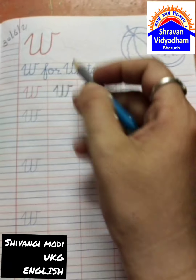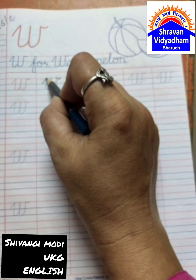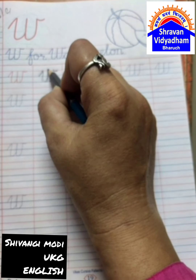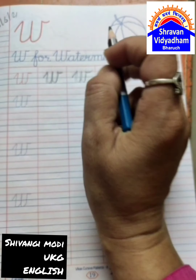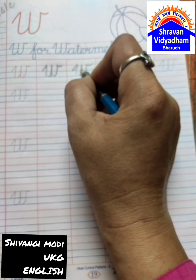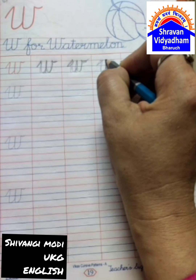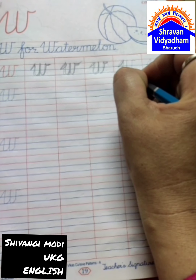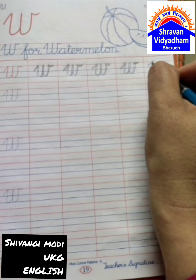Write down the W. Blue line to red line, slanting line, then down curve, then down curve, then down. V for Watermelon, V for Watch, V for Wall.